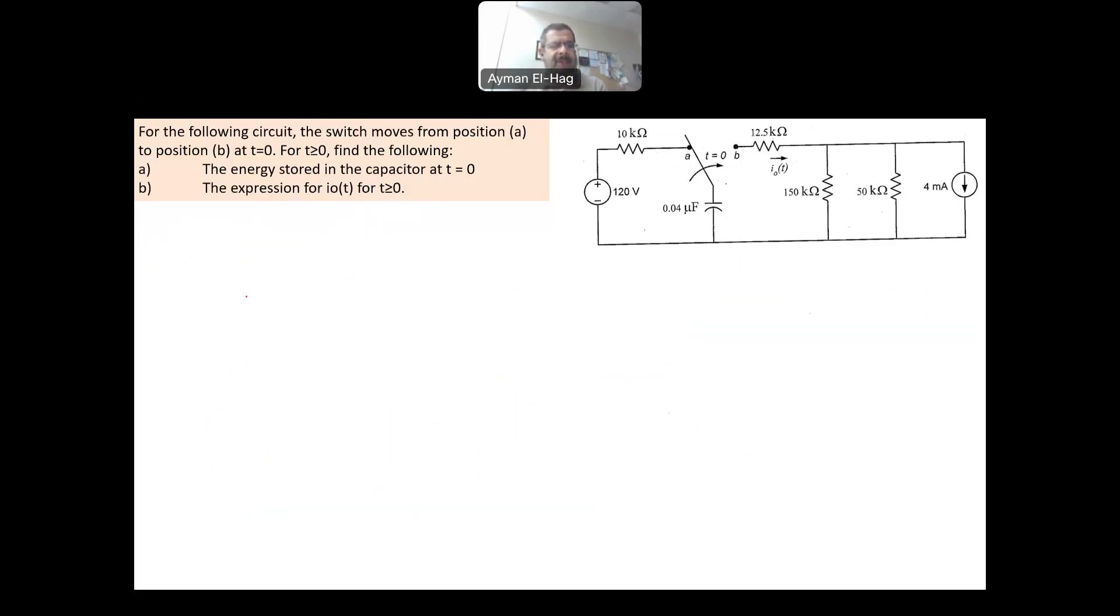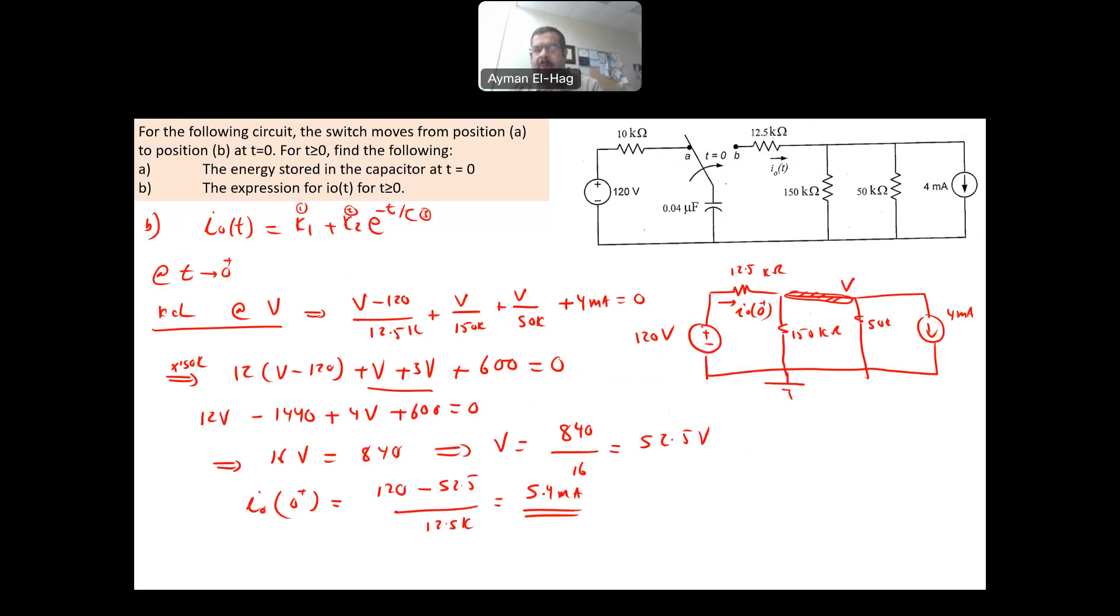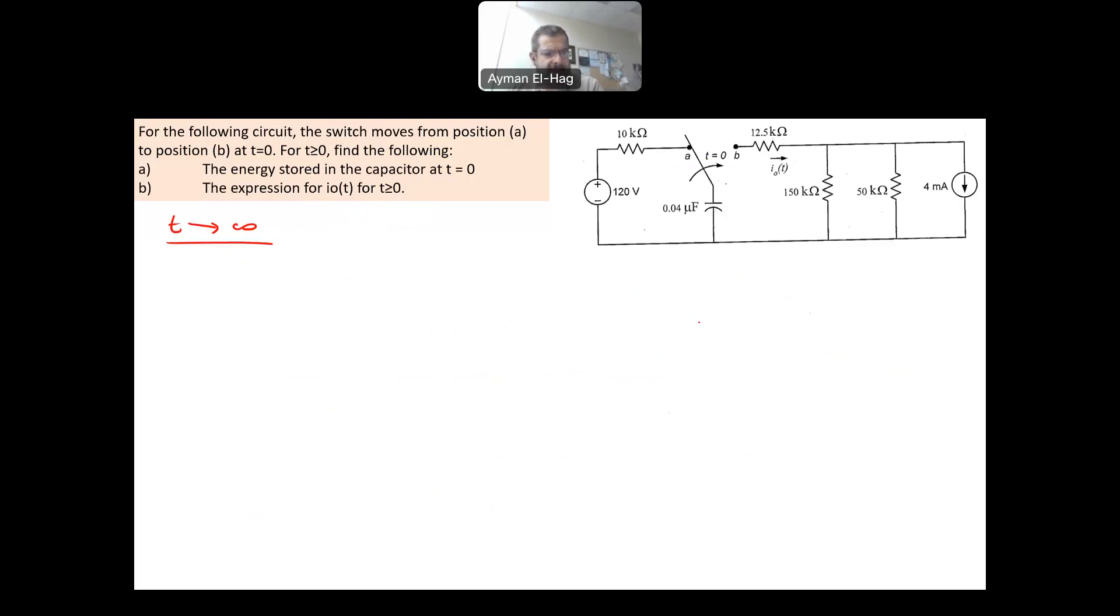Then, we go and solve for the circuit as T goes to infinity. As T goes to infinity, we use the same circuit, but this now will be an open circuit. So my circuit now will be 12.5 kilo, the VC open circuit, 150 kilo, 50 kilo, and we have here the 4 milliamps. I need to find I0 as T approaches infinity. And it's very obvious here. This is an open circuit. So your I0 at infinity will equal to 0. We found I0 at 0 and I0 at infinity.